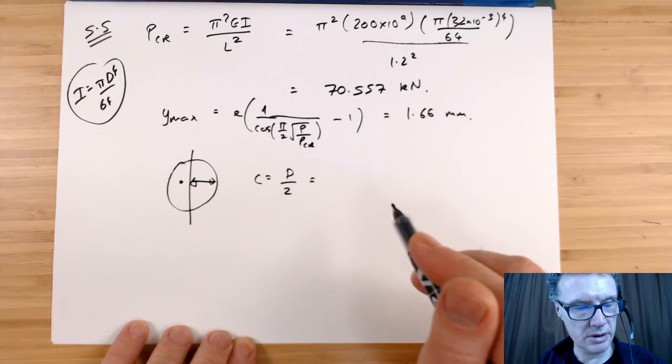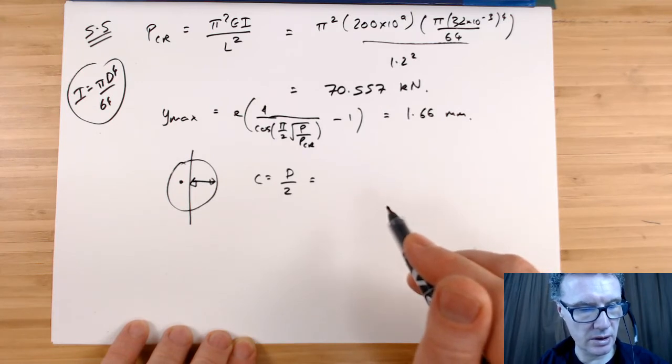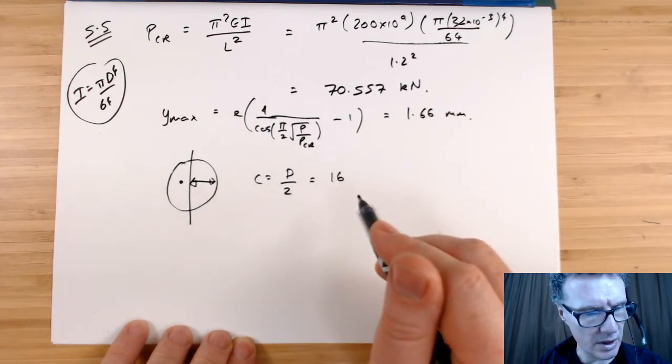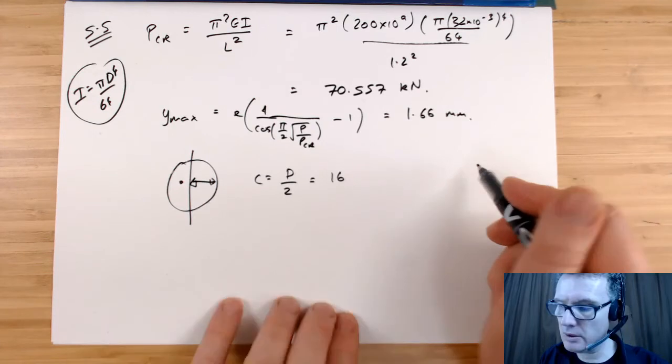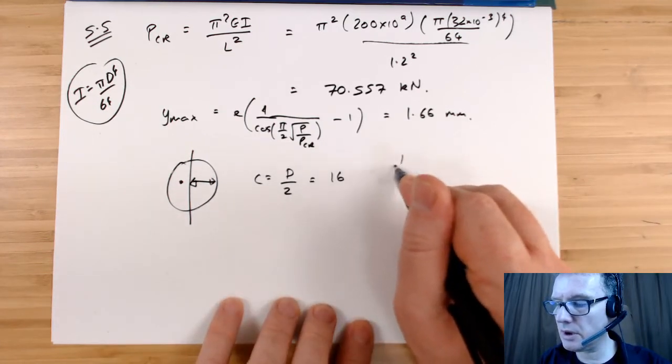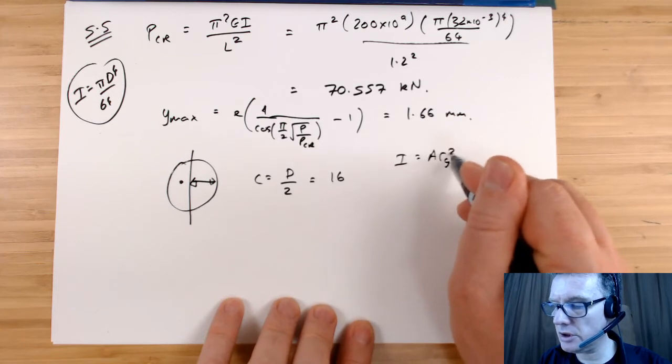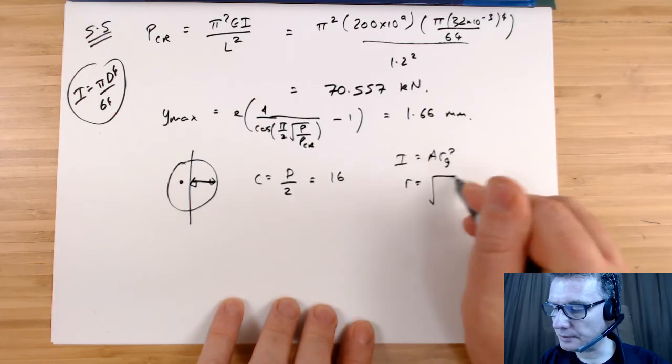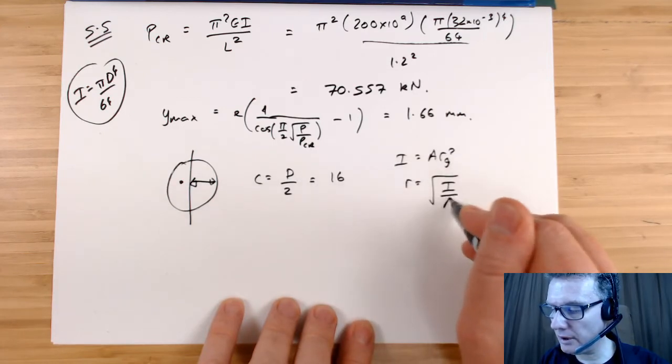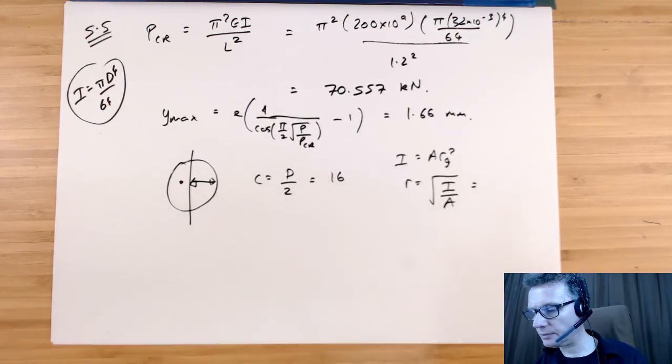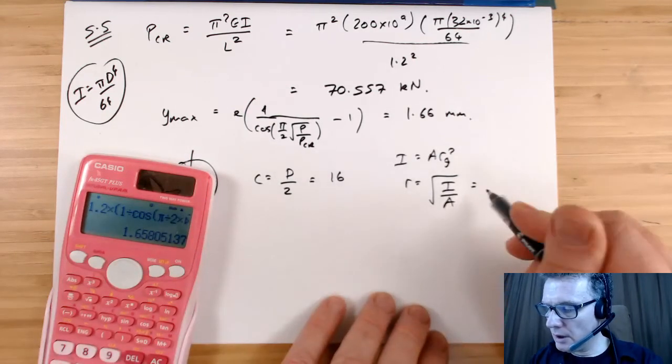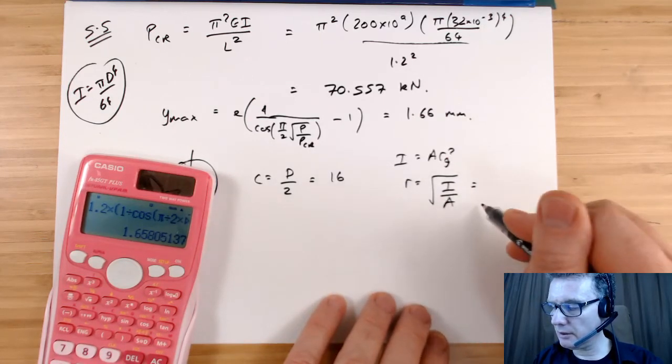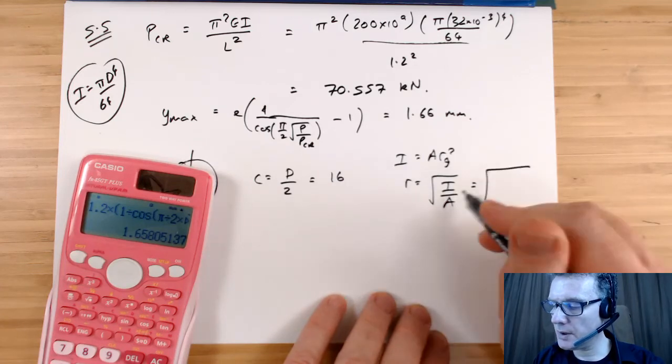Working in millimeters, so that gives me the diameter is 32, so C is 16. Have I been told what R is? No. So do you remember that we've got I = A × Rg², so Rg equals √(I/A).